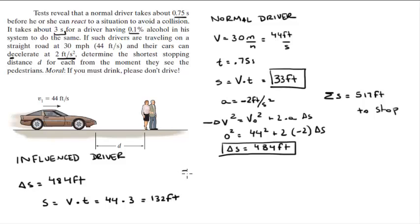So the total distance that it took the influence driver to stop is given by the sum of 484 and 132 which is 616 feet to stop. Final answer for how much distance it took the normal driver to stop and final answer for how much distance it took the influence driver to stop.